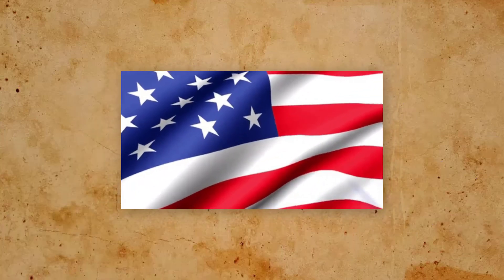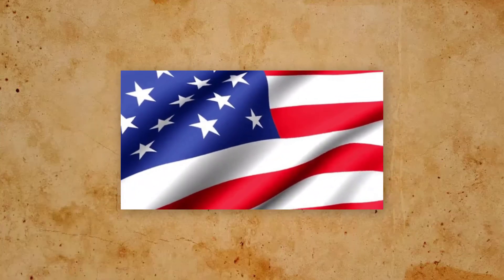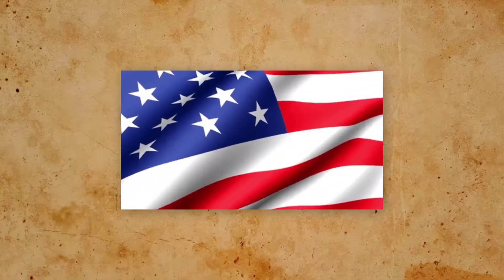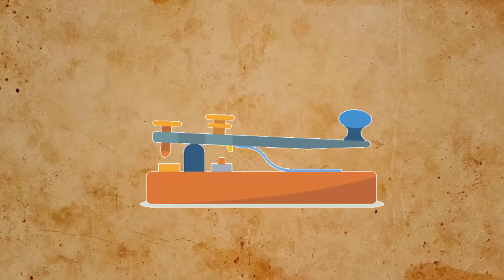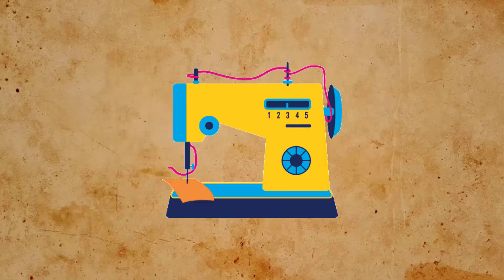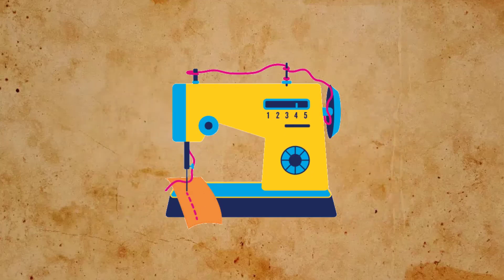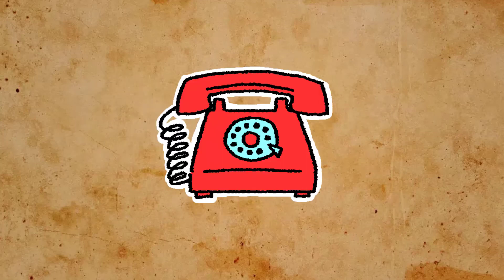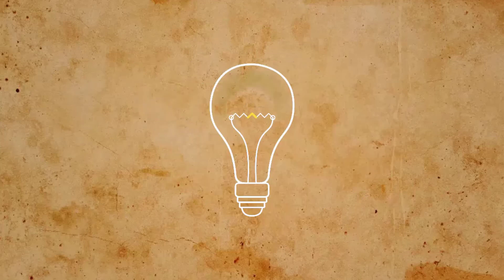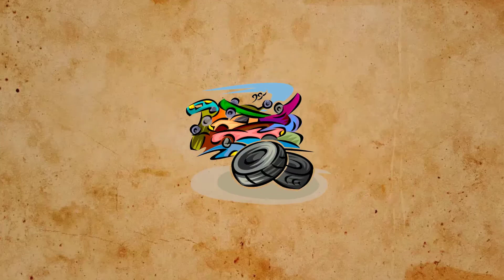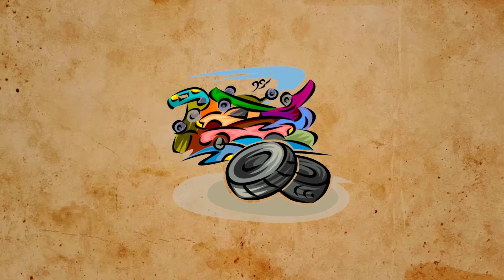Some of the most important American inventions during the Industrial Revolution included the telegraph, the sewing machine, the telephone, the cotton gin, the practical light bulb, and vulcanized rubber.